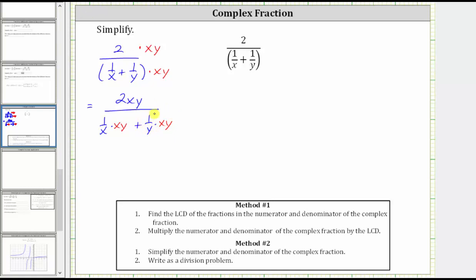Let's simplify before multiplying, and if it's helpful, we can write xy as a fraction with a denominator of one. Notice here we have a common factor of x. X divided by x simplifies to one. Here we have a common factor of y. Y divided by y simplifies to one.